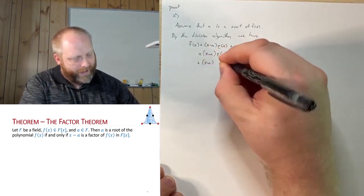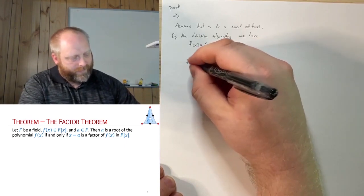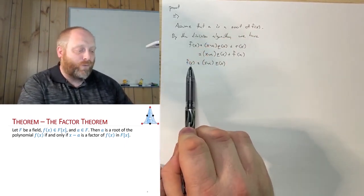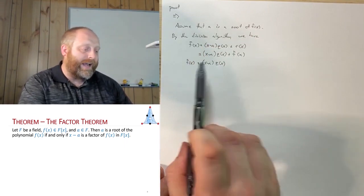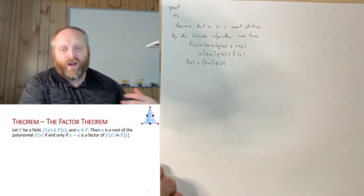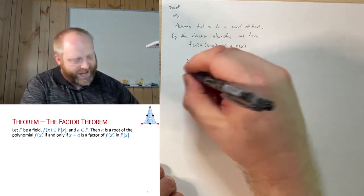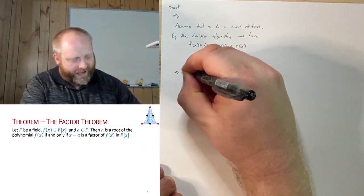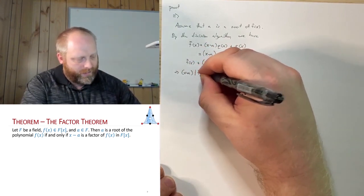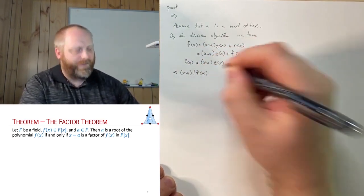So f(x) equals (x minus a)·q(x). This means I can write f(x) as a product of x minus a and q(x), which by the definition of divisibility means x minus a is a factor of f(x). That completes the first direction.